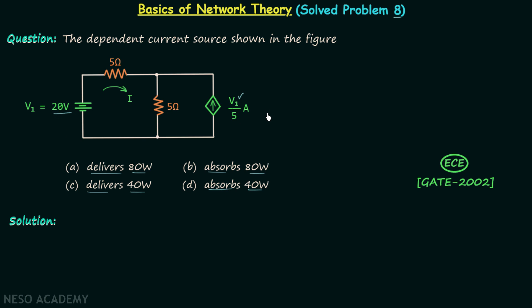Therefore, the current provided by the dependent current source is equal to 20 divided by 5, which is 4 amperes.